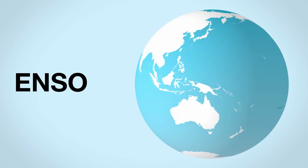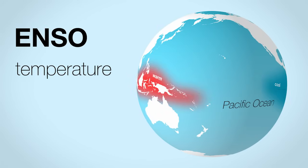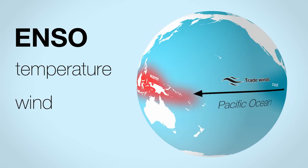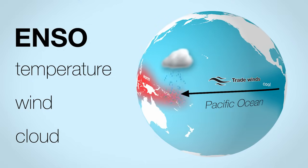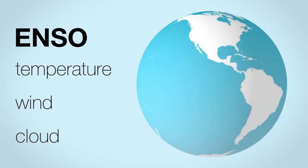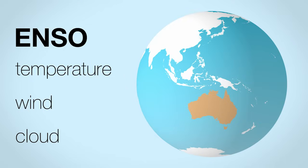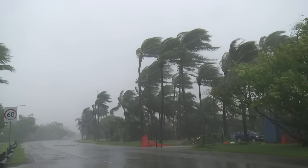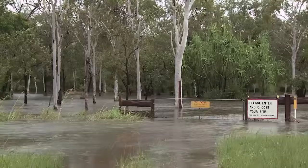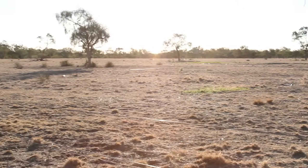ENSO is a natural cycle in Pacific Ocean temperatures, winds and cloud. This influences climate right around the globe. In Australia, ENSO is often behind our climate extremes, from devastating floods to searing droughts.